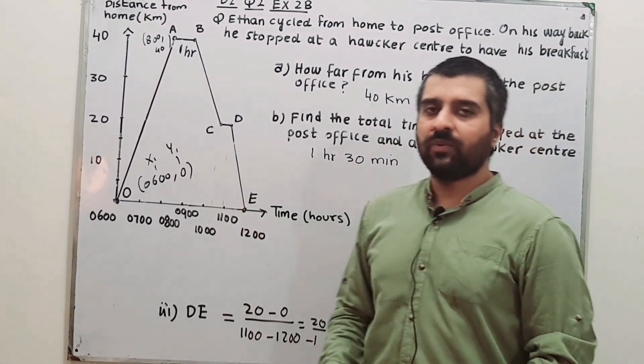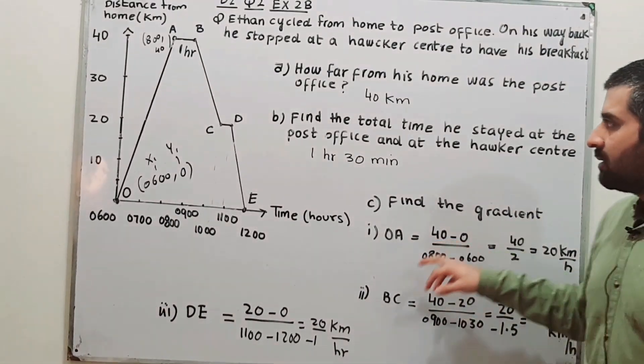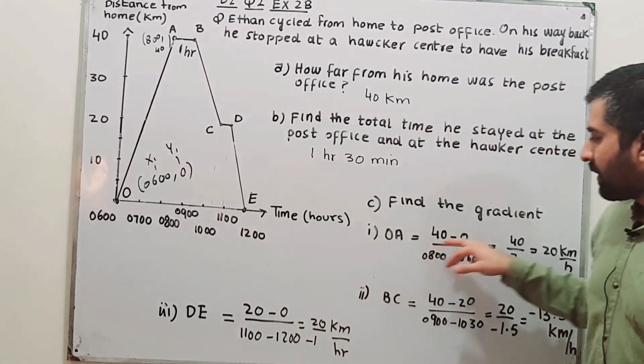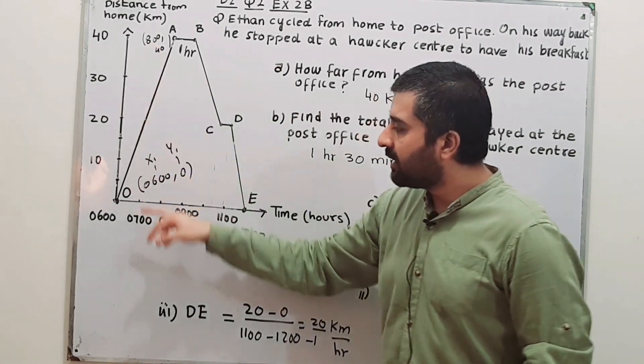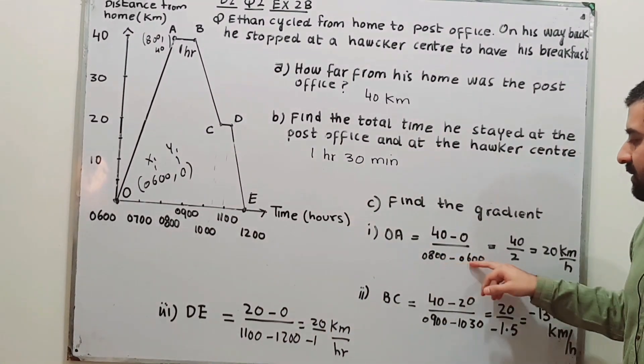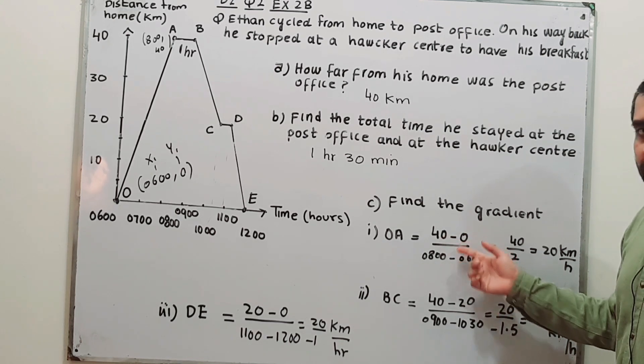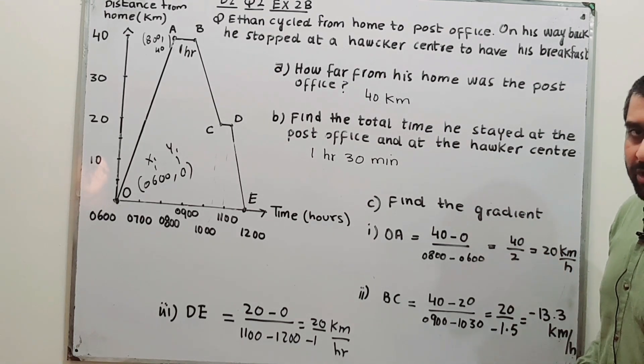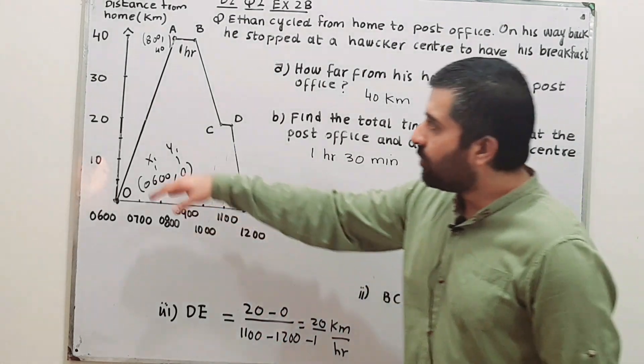Using the formula y2 minus y1 divided by x2 minus x1, the formula for gradient, y2 which is 40 minus y1 which is 0, divide it by x2 which is 0800 hours minus x1, 0600 hours. So 8 hours minus 6 hours will give you 2 hours, while 40 minus 0 will give you 40. 40 divided by 2 is 20 kilometers per hour. So that is his speed from O till A.